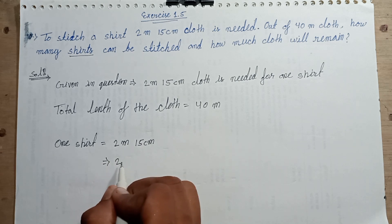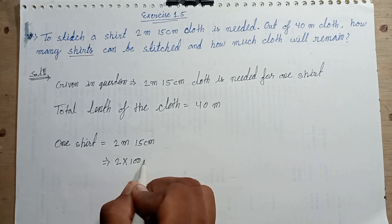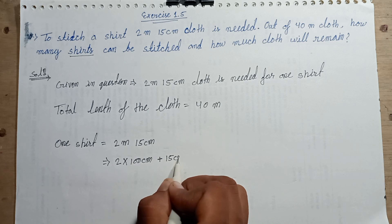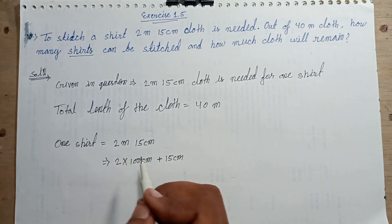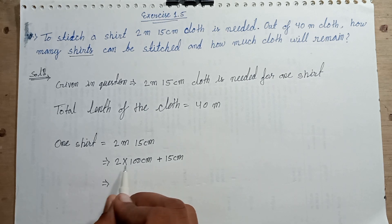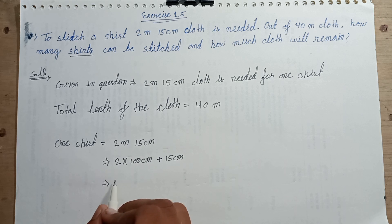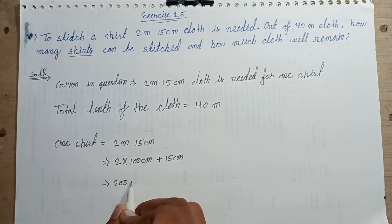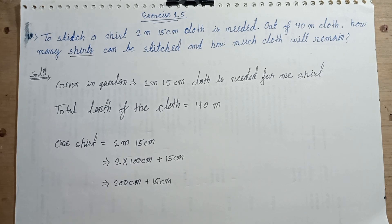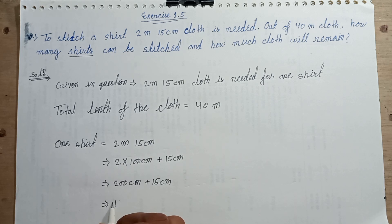2 meters multiplied by 100 centimeters plus 15 centimeters. 2 meters converts to 200 centimeters. 200 plus 15 equals 215 centimeters. So one shirt requires 215 centimeters of cloth.